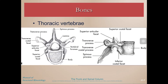Moving on to the thoracic vertebrae — you can see they're getting larger relative to the vertebral foramen. We have the spinous process, and now we have transverse processes where we're going to have articulations with the tubercles of your ribs. We also have superior and inferior articular facets: the superior costal facet for the rib, and the superior articular facet that articulates with the vertebra above it.